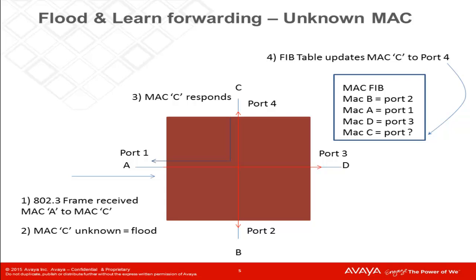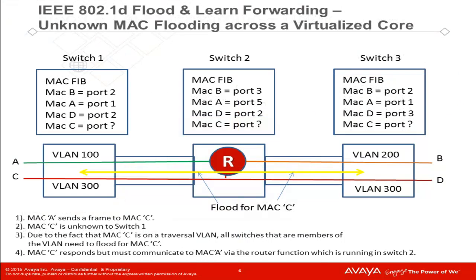This seems like a simple model, and it is. The problem is that this was way back in the early 90s. Things have changed drastically in the industry since the inception of this model. This is brought home by a fairly simple core network. As in the case of all network cores today, there are multiple virtual LANs, which for all intents and purposes are to be viewed as flooding domains.